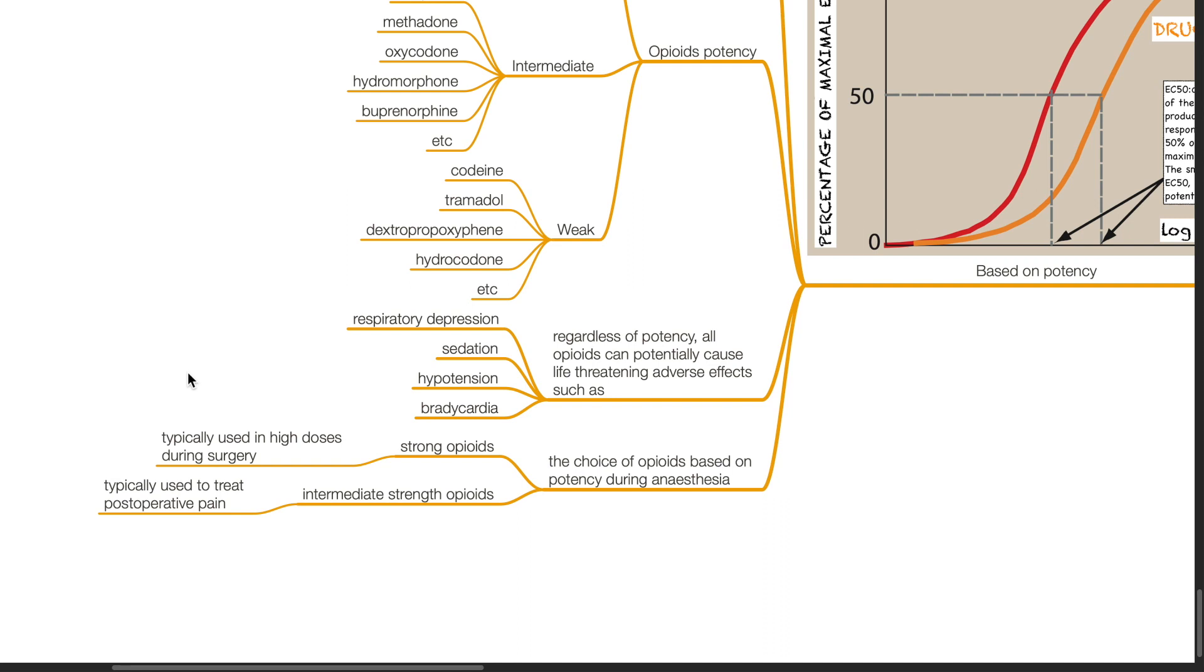The choice of opioids based on potency during anesthesia. Typically strong opioids are used intraoperatively in high doses during general anesthesia. Intermediate-strength opioids are typically used post-operatively to treat post-op pain.